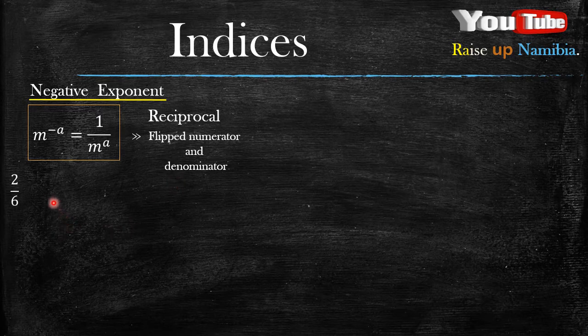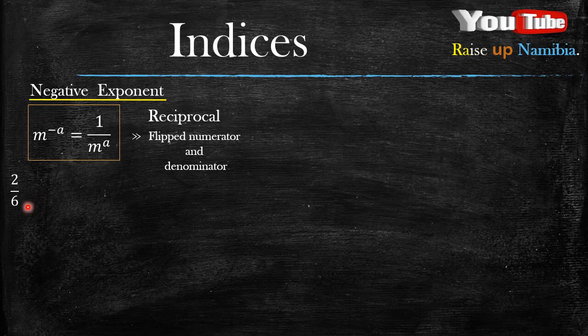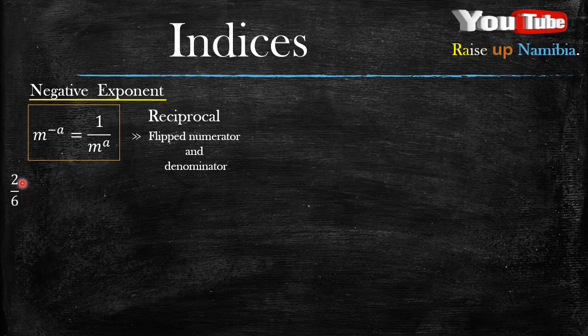So say for example, you have 2 over 6. So if you are asked for the reciprocal of 2 over 6, you flip the numerator and the denominator. So the answer becomes 6 over 2. So this is the reciprocal for this.